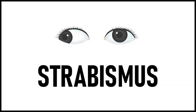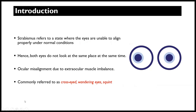I'm sure some of you have had a scenario where you have somebody who is looking straight at you, as if they're looking at you, but apparently they are not looking at you — they are looking at something else or something next to you. So strabismus is an interesting eye disease. It refers to a state where the eyes are unable to align properly under normal conditions.